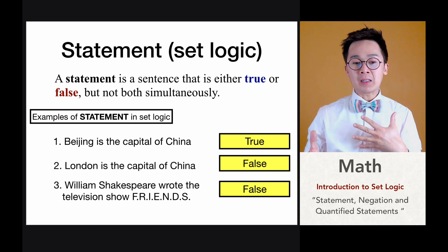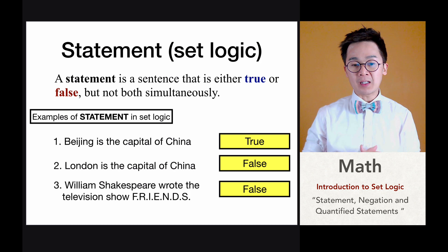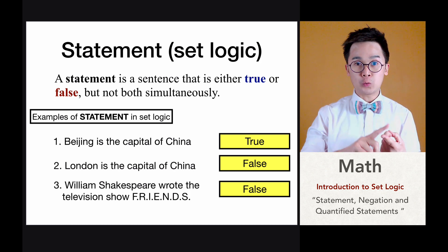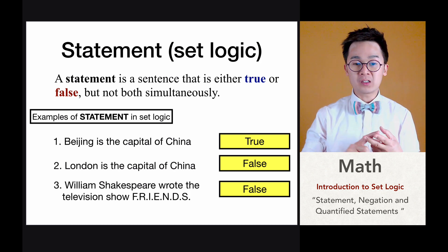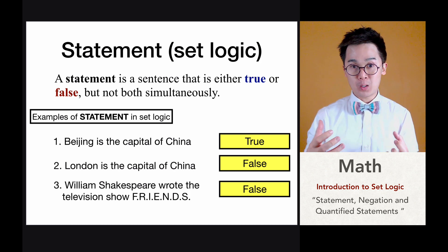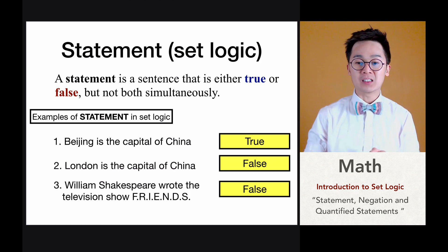So once again, for a statement to be a valid statement in set logic, it could either be true or false, but not both simultaneously.